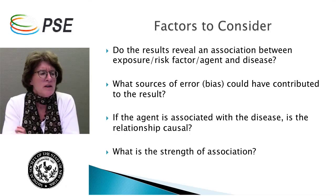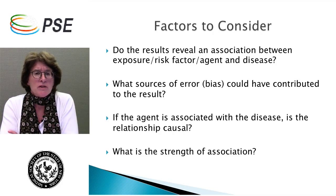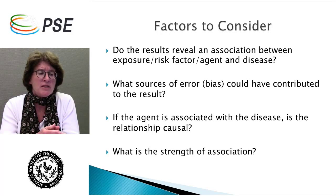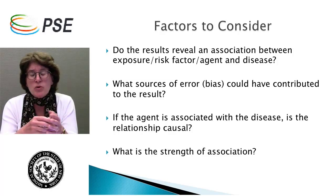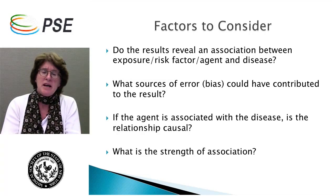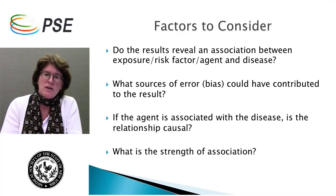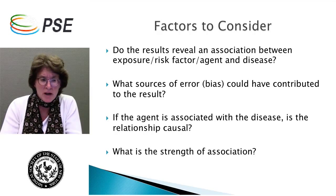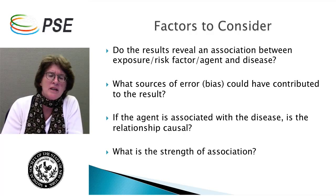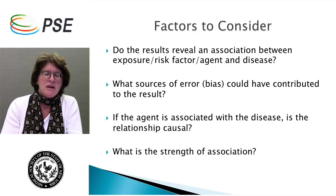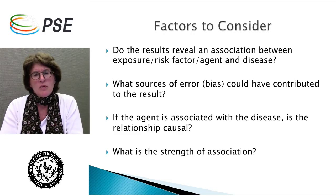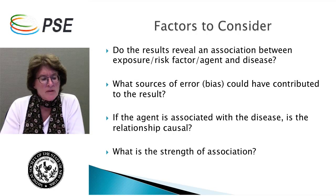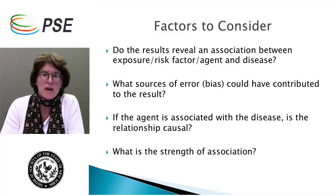What we want to consider: do the results reveal an association between exposure, risk factor, agent, and disease? What kind of association — is it weak, moderate, or strong? We need to assess the strength of the association and consider what sources of error, which are bias, could have contributed to the results. What didn't we take into account? And if the agent is associated with the disease, to what extent is that relationship causal? Going back to the same question: what is the strength of the association?